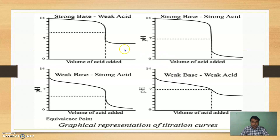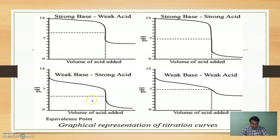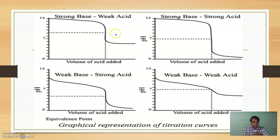The pH ranges for different titrations are as follows. For Strong Acid vs. Strong Base, the pH range is 3.3 to 10.5; within this range we can get the end point. For Strong Acid vs. Weak Base, the end point is at 3.5 to 7.5. For Weak Acid vs. Strong Base, the pH range is 6.5 to 7.5; within this range we get the end point. For Weak Acid vs. Weak Base, the pH range is also 6.5 to 7.5.